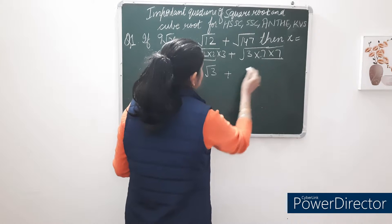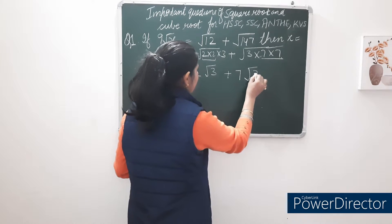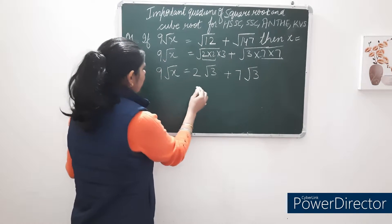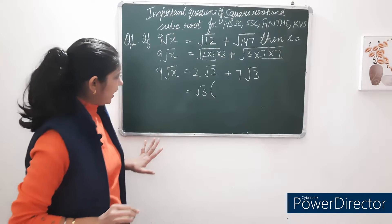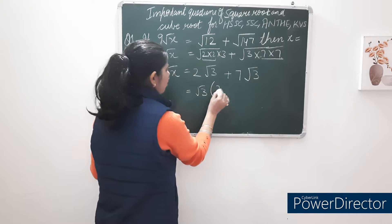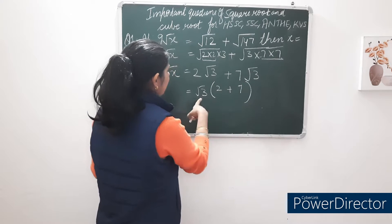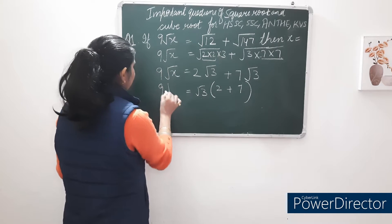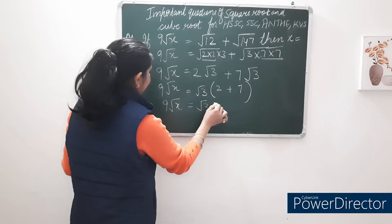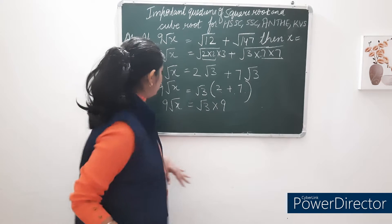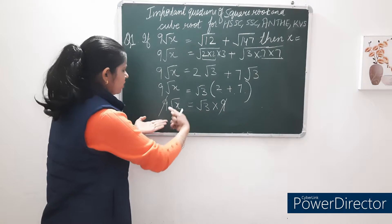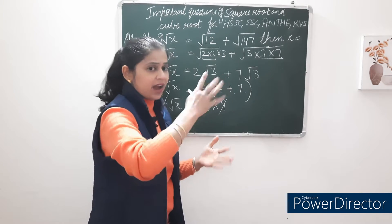So 9√x = 2√3 + 7√3. अब इन दोनों में √3 common है — now √3 is common in both. We take √3 outside the bracket, so inside we have 2 + 7 = 9. Therefore 9√x = √3 × 9.